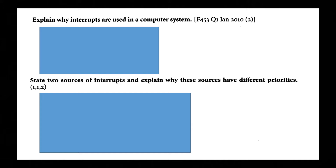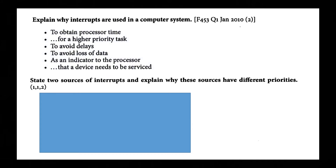Here are the answers. For explaining why interrupts are used: they are to obtain processor time for a higher priority task, to avoid delays, and to avoid data loss, as indicated to the processor that a device needs to be serviced. What will get your mark would be 'to obtain processor time for a higher priority task', and then 'to avoid data loss'.